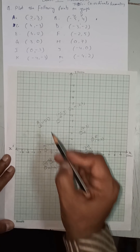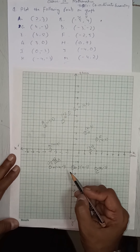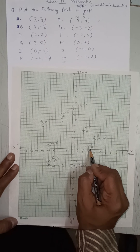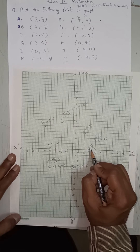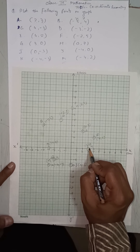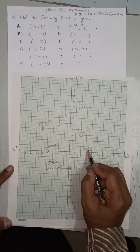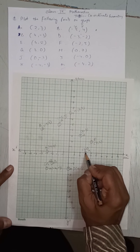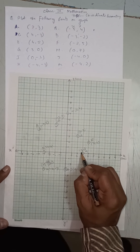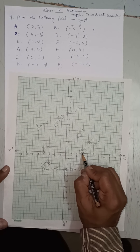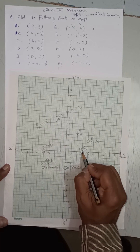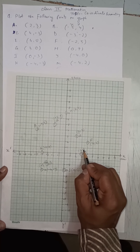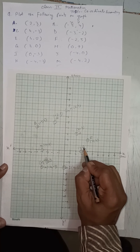Point G is (3, 0). 3 is positive x: 1, 2, 3. Since y value is 0, we do not move upward or downward. So (3, 0) lies on the x-axis. We make a dot and circle there — that is point G at (3, 0).